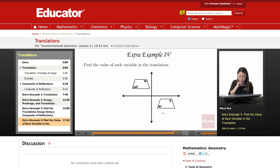And because it's a congruence transformation, they have to be exactly the same. They're congruent, meaning all corresponding parts are congruent. So we just want to find the value of each variable. We have x here, and we have y here.